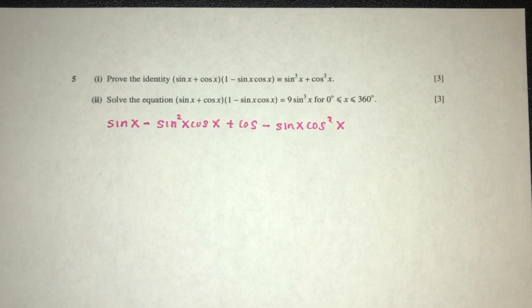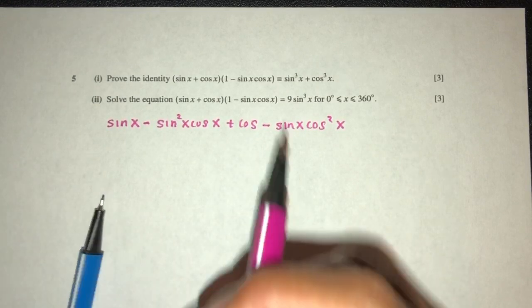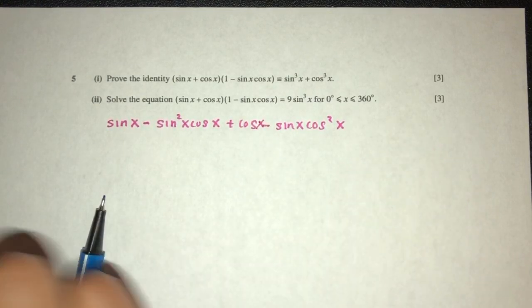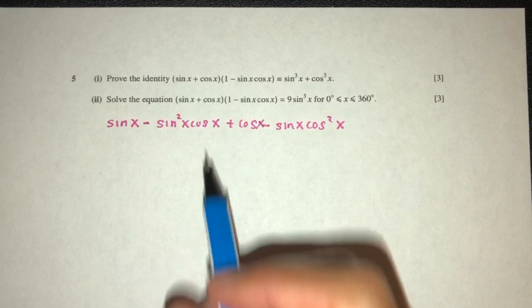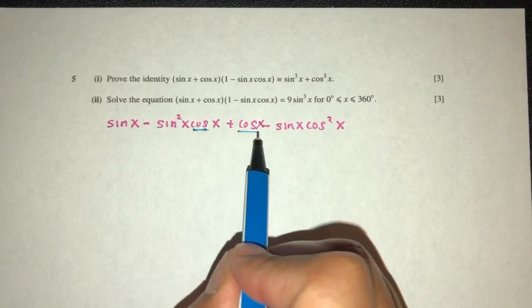So I would say because here, so again this is cos x not cos, right? So let's do something. Because here we have this and this, let's factorize this.